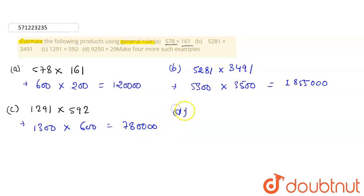In the last part, that is D, we have 9250 multiplied by 29. 9250 is approximately equal to 9200, and 29 is 30. The product will give us 276,000.